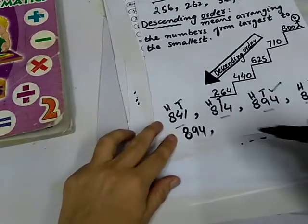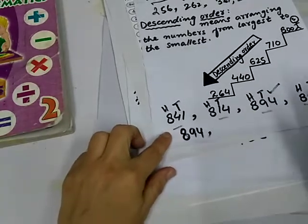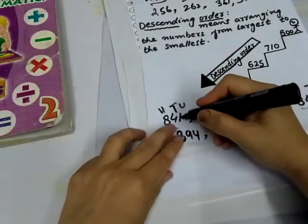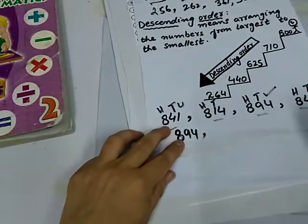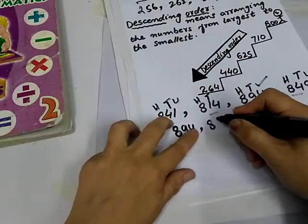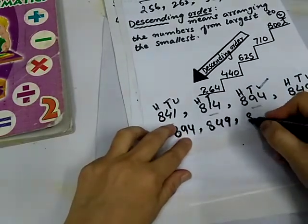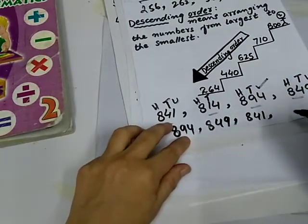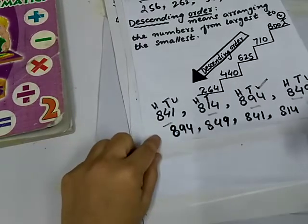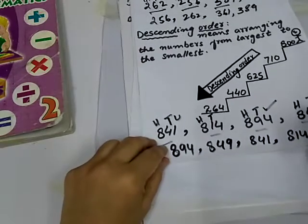And check, 4, 10, 1, 10 and 4, 10. Now, 4 or 4, both 10 values are equal. So, check the unit value. 1 and 9. 9 is greater than 1. So, the second number is 849. Third number is 841. And last, 840. Now, these numbers are arranged in descending order greatest to the smallest.